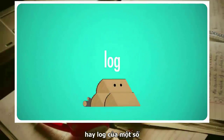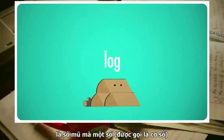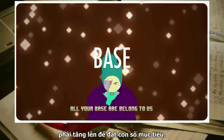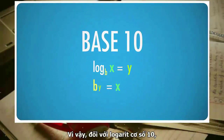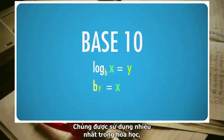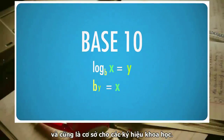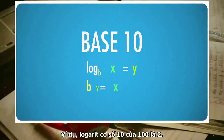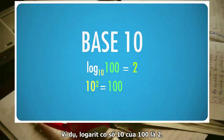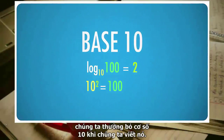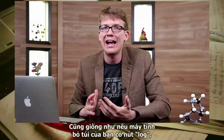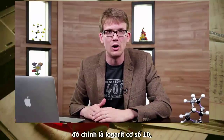The logarithm, or log, of a number is the exponent to which another number called the base must be raised to produce the target number. For base 10 logs, the base is 10 — what we use most in chemistry, and what we base scientific notation on. For example, the base 10 logarithm of 100 is 2, because 10 raised to the power of 2, or 10 squared, equals 100. Base 10 logs are so common that we often leave the subscript 10 off. If your calculator has a log button, that's just for base 10 logs.